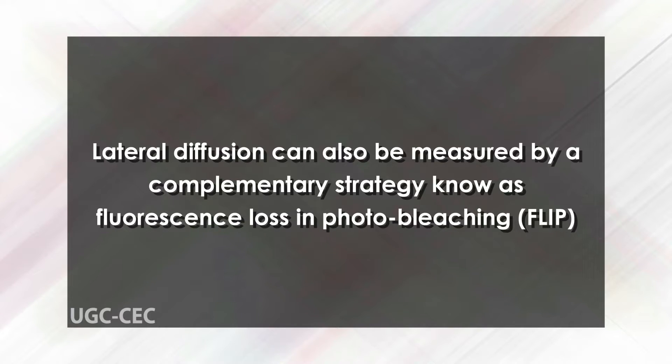If molecules are mobile, they exist in either bleached or unbleached states: molecules leaving the illuminated area are bleached, and molecules entering the area are unbleached, helping to increase fluorescence intensity. Lateral diffusion can also be measured by fluorescence loss in photobleaching (FLIP), where a small area is continuously bleached and fluorescent proteins are bleached as they diffuse into it, eventually resulting in all bleached proteins. From both FRAP and FLIP, the diffusion coefficient can be calculated.